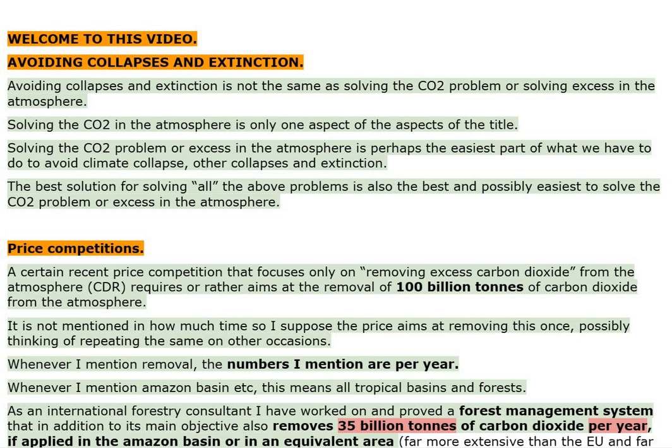Welcome to this video: Avoiding Collapses and Extinction. Avoiding Collapses and Extinction is not the same as solving the CO2 problem or solving excess in the atmosphere. Solving the CO2 in the atmosphere is only one aspect of the title. Solving the CO2 problem or excess in the atmosphere is perhaps the easiest part of what we have to do to avoid climate collapse, other collapses and extinction.